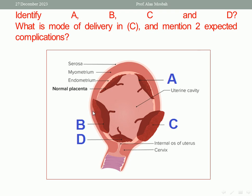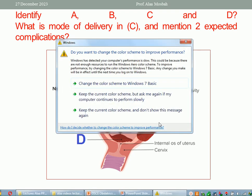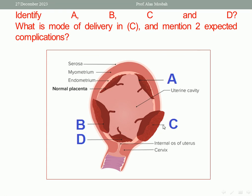B: more penetration in the muscle wall of the uterus by the placenta — it is called the placenta increta. C: the placenta invades the whole muscle wall, reaching the serosa and the surrounding of the uterus, so it is called the placenta percreta. D is also placenta percreta. So again: A — placenta accreta, B — placenta increta, C — placenta percreta, D — placenta percreta.